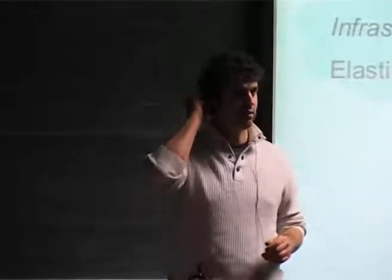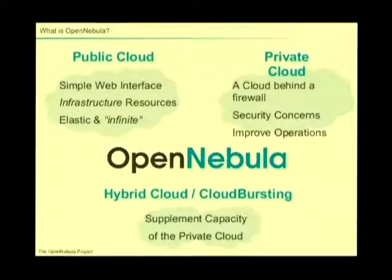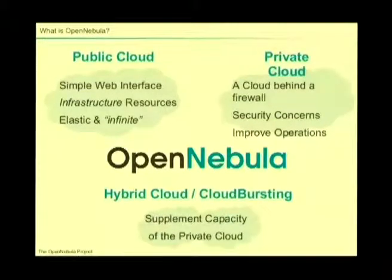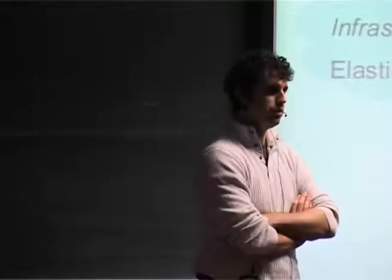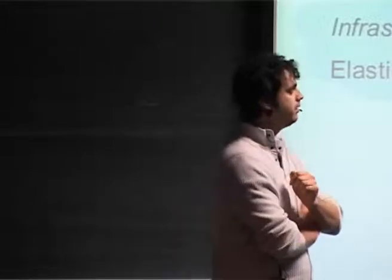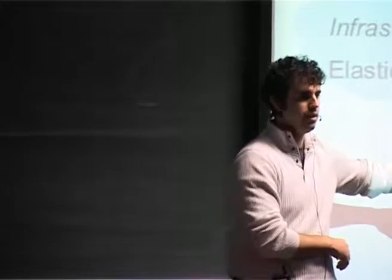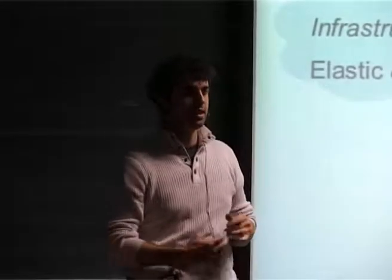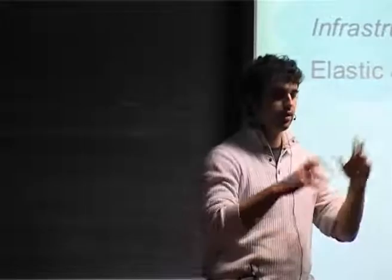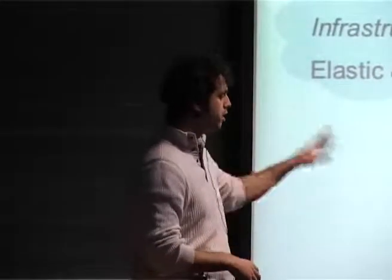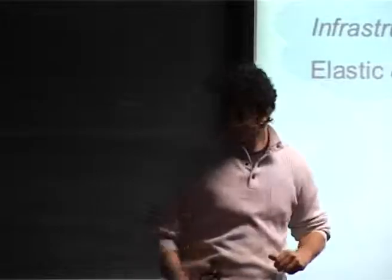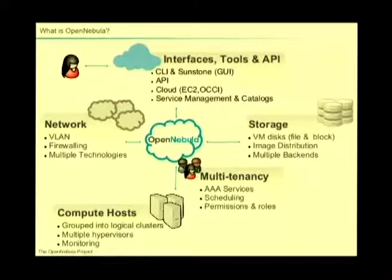OpenNebula is a cloud management software. If you have a data center, if you have a set of hosts and you want to expose a private cloud or a public cloud, OpenNebula will let you do that. With the private cloud we expose public interfaces and we also have support for hybrid computing — that means we can send virtual machines directly to Amazon. So if you have an application that needs to dynamically grow, you can send it to Amazon.